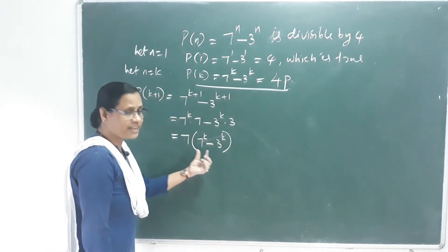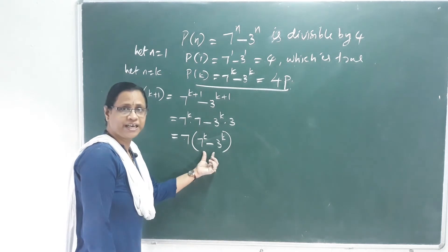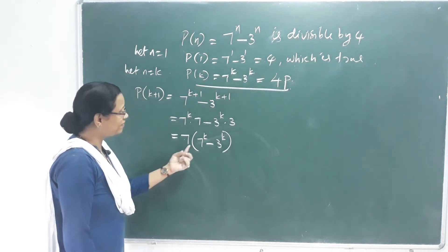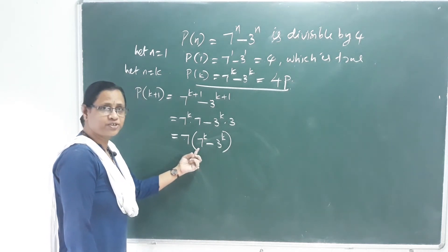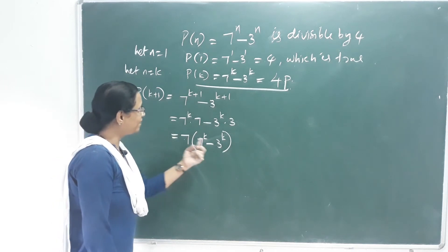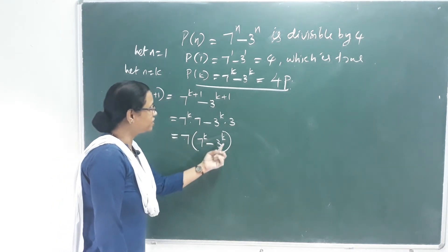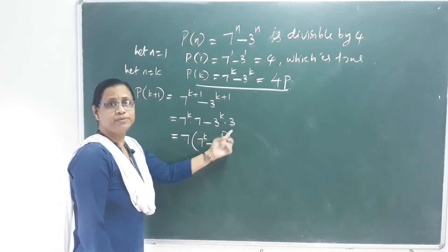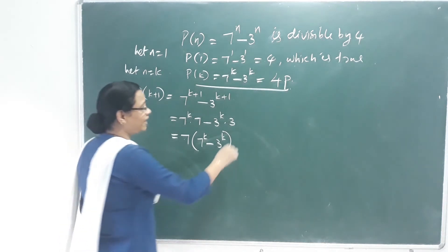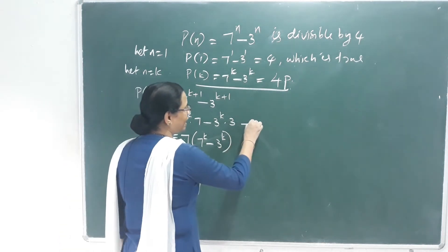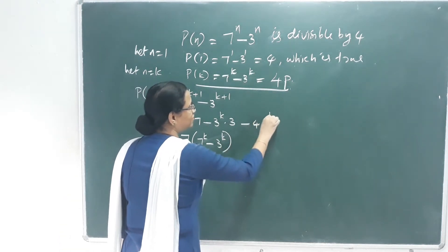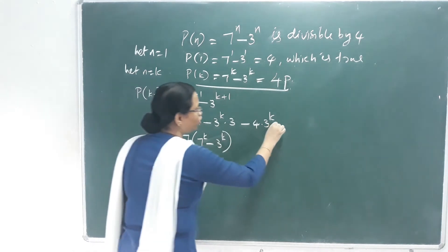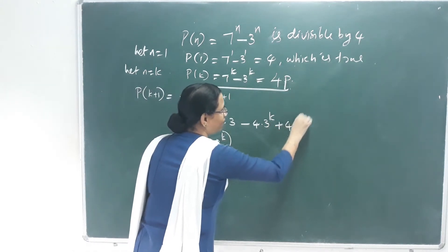Correcting the step: 7 is distributed — 7 into 7 raised to k, minus 7 into 3 raised to k. There is no 3 times, so we have minus 4 into 3 raised to k. We subtract and add.